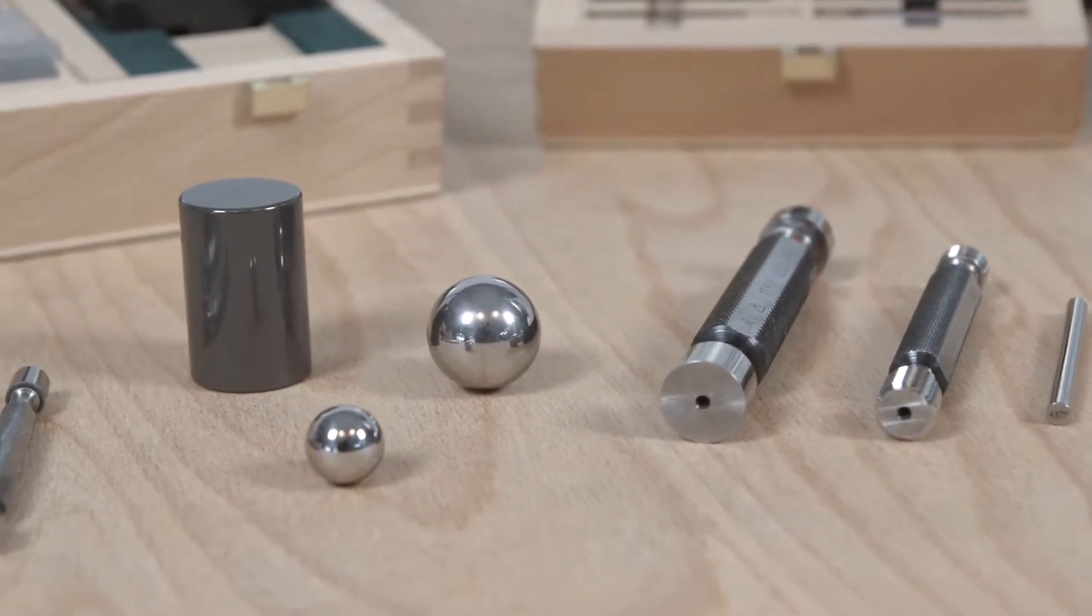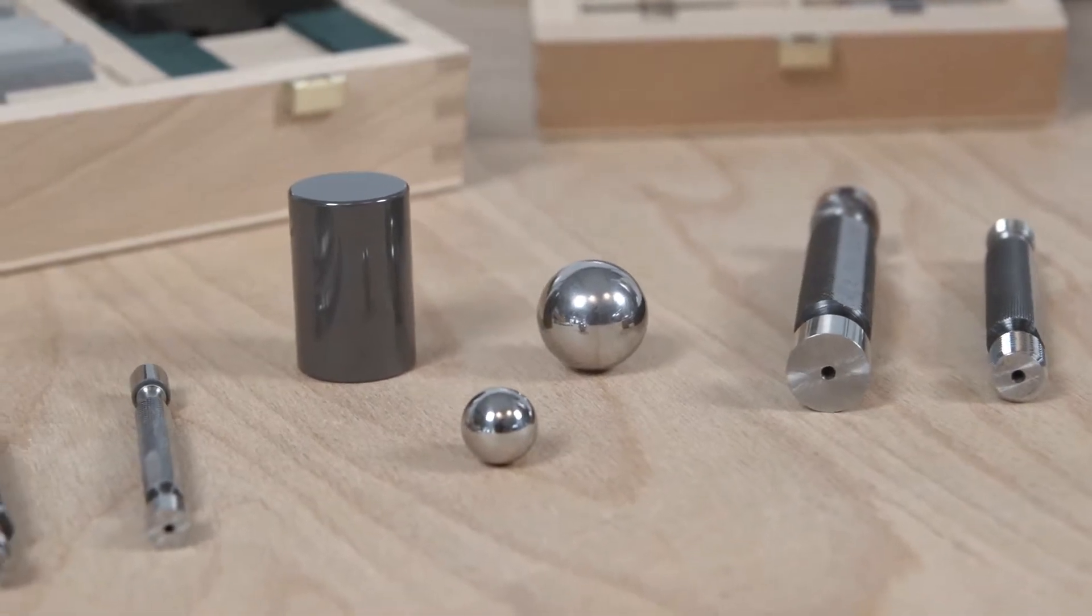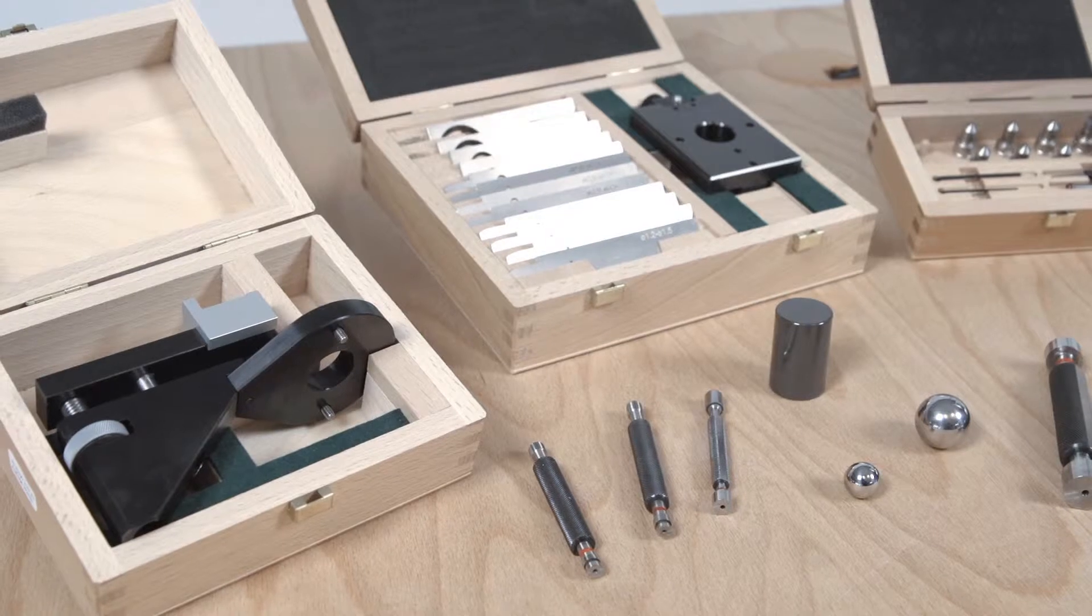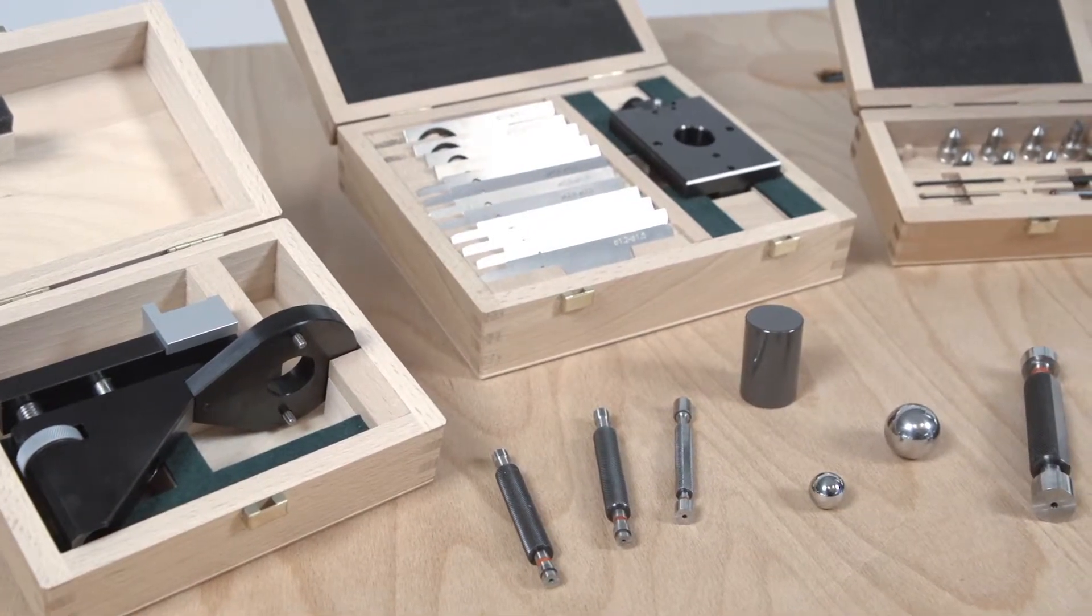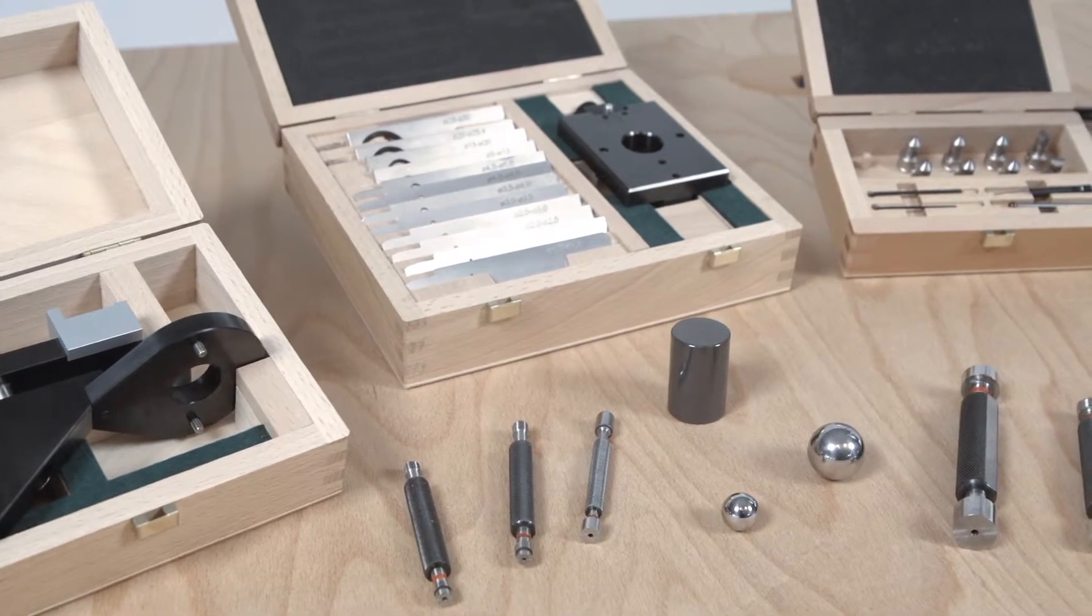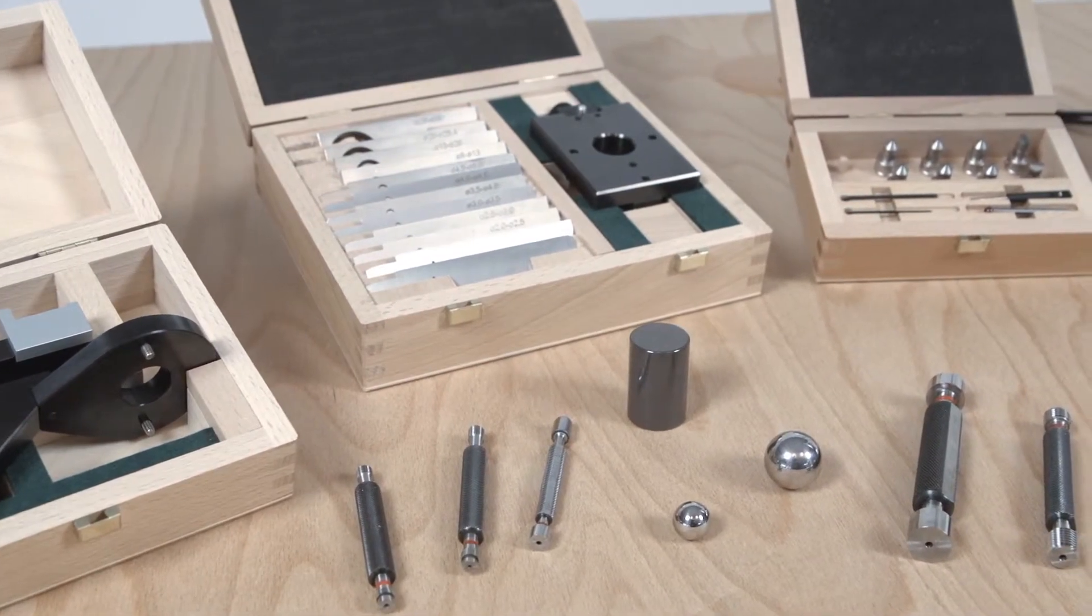Gauges, plug and thread plug gauges, pin gauges or measuring balls are examples of comparable measuring devices. They are used to compare the target size of the gauge with the actual size of the test piece. No statement is made about the extent of the deviation.